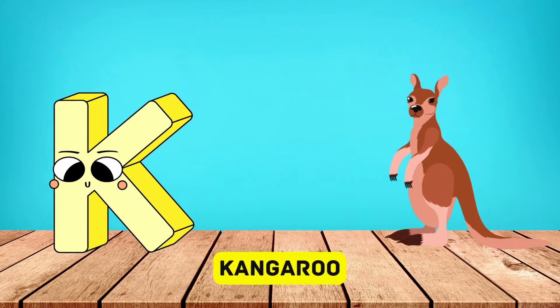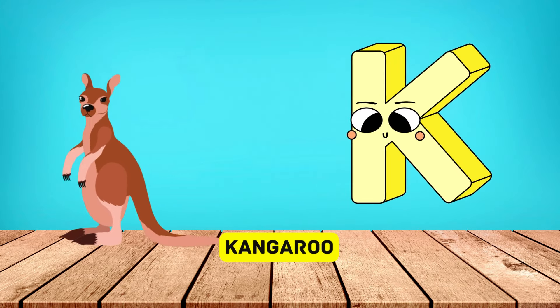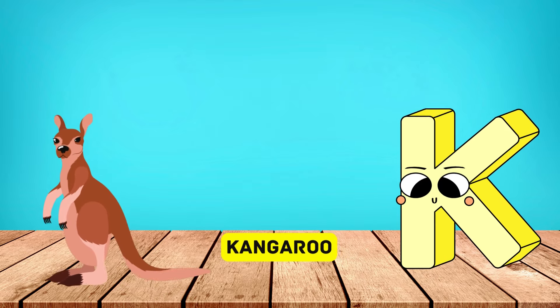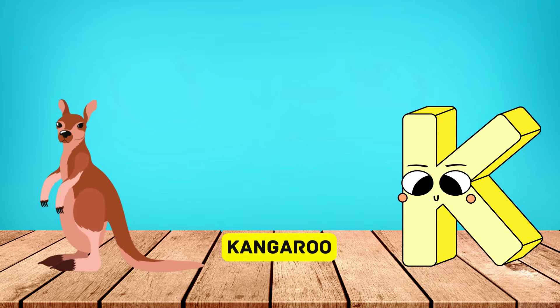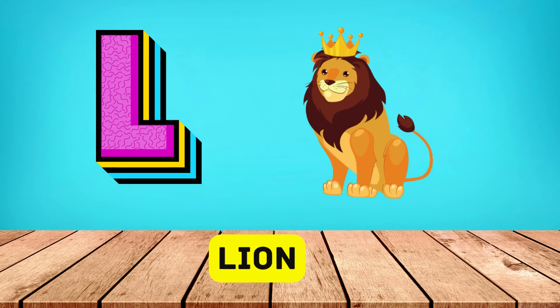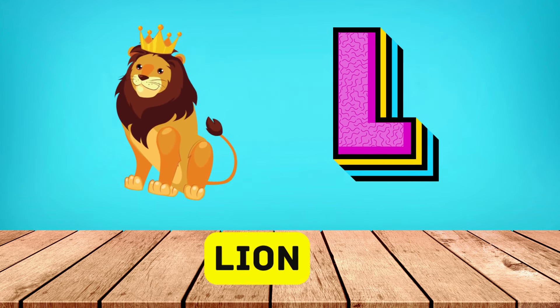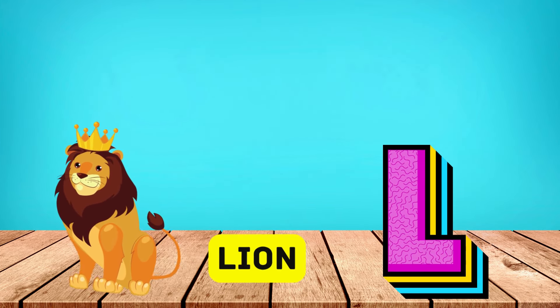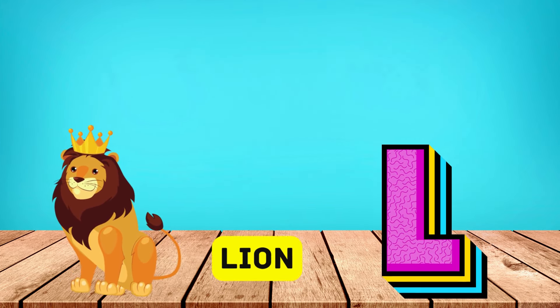K is for kangaroo, k-k-kangaroo. L is for lion, l-l-lion.